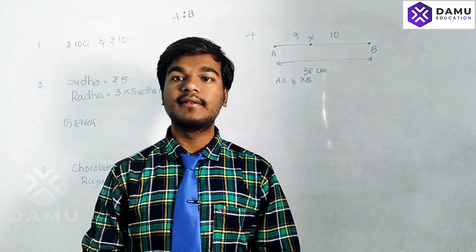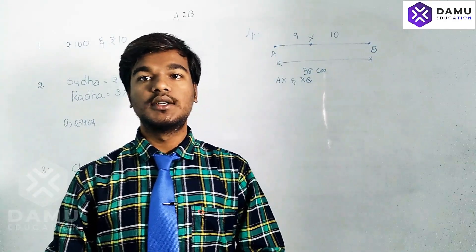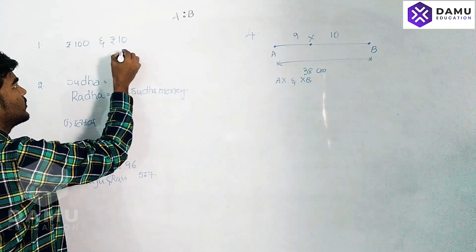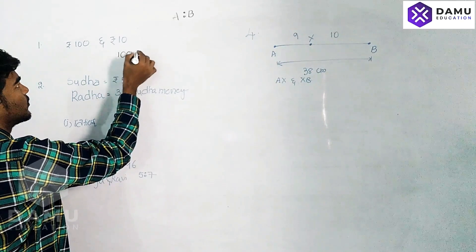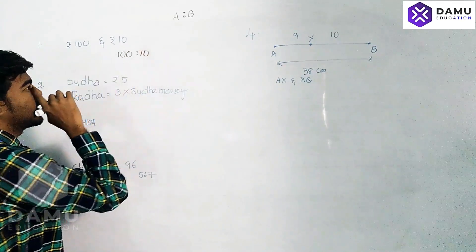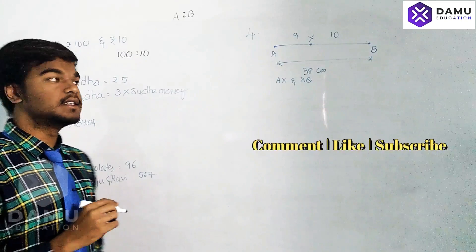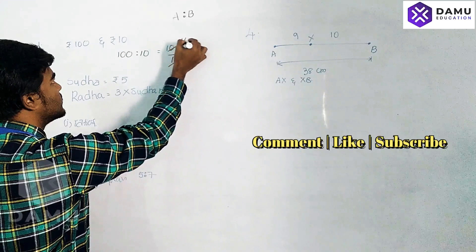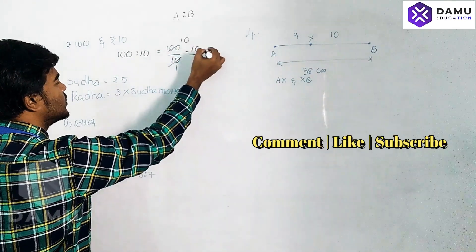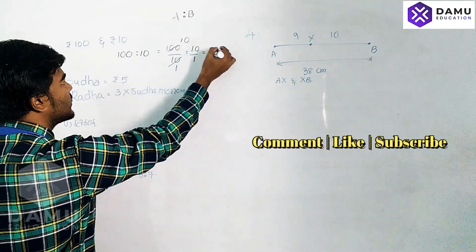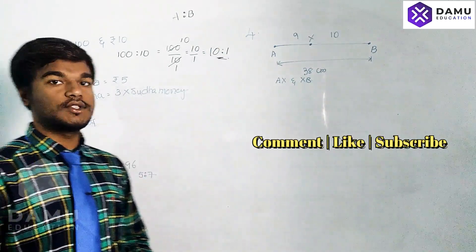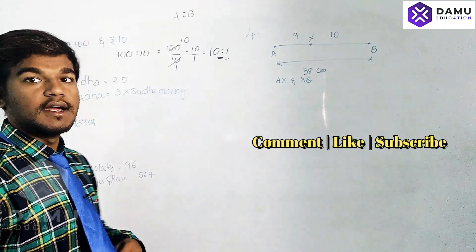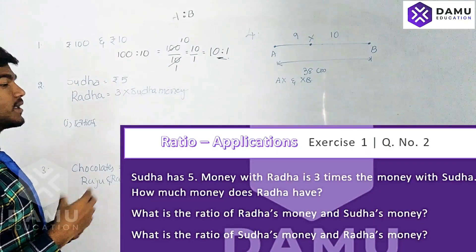So the ratio of 100 and 10 — in simplest form of ratios, we always have to cancel and reduce. The ratio of 100 to 10 is written as 100:10, which is 100 by 10, that is 10 by 1. So the simplest form is 10 is to 1. This is the simplest form for the ratio of 100 to 10.